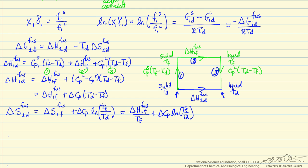Using the same state function idea for the entropy change, delta S of fusion of the solvent at temperature Td equals delta S of fusion at the pure component freezing temperature Tf plus a delta Cp log term. Substituting delta S of fusion equals delta H of fusion over Tf — this relation holds for all phase changes: delta S equals delta H divided by the temperature at which the phase change occurs.